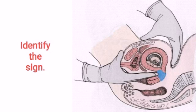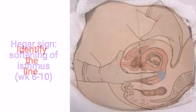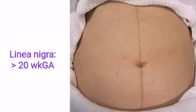Identify the sign: Hagar sign — softening of isthmus. Identify the line: Linea nigra, seen after 20 weeks of gestation.